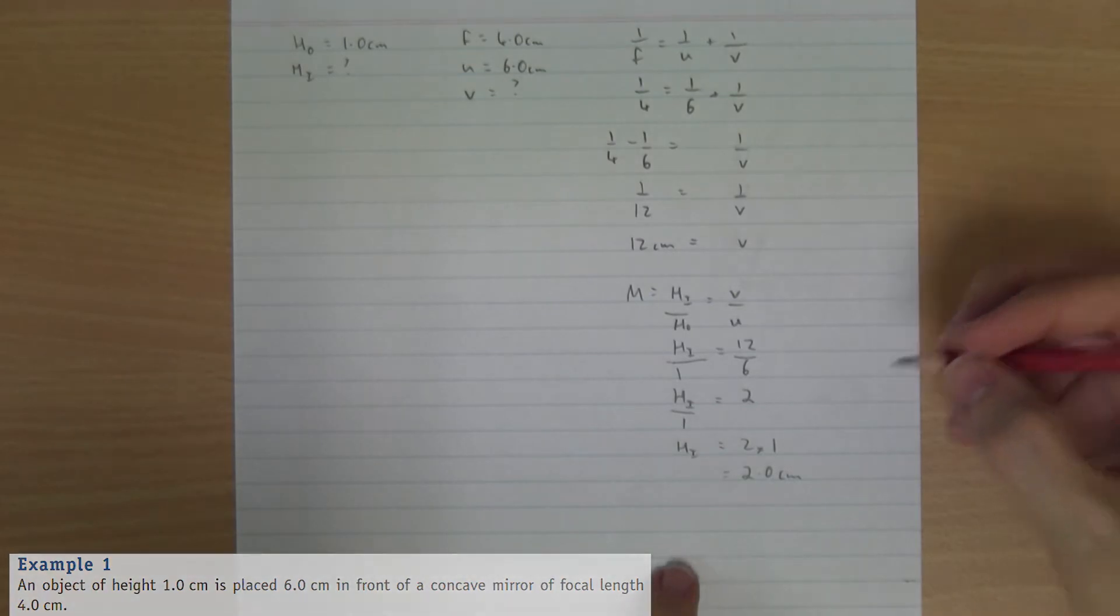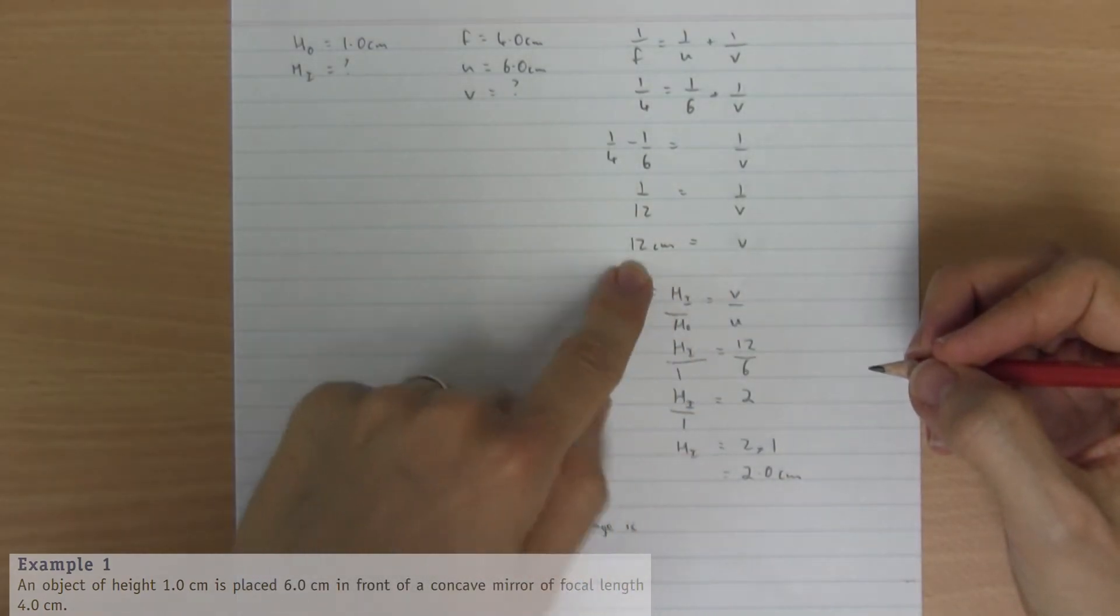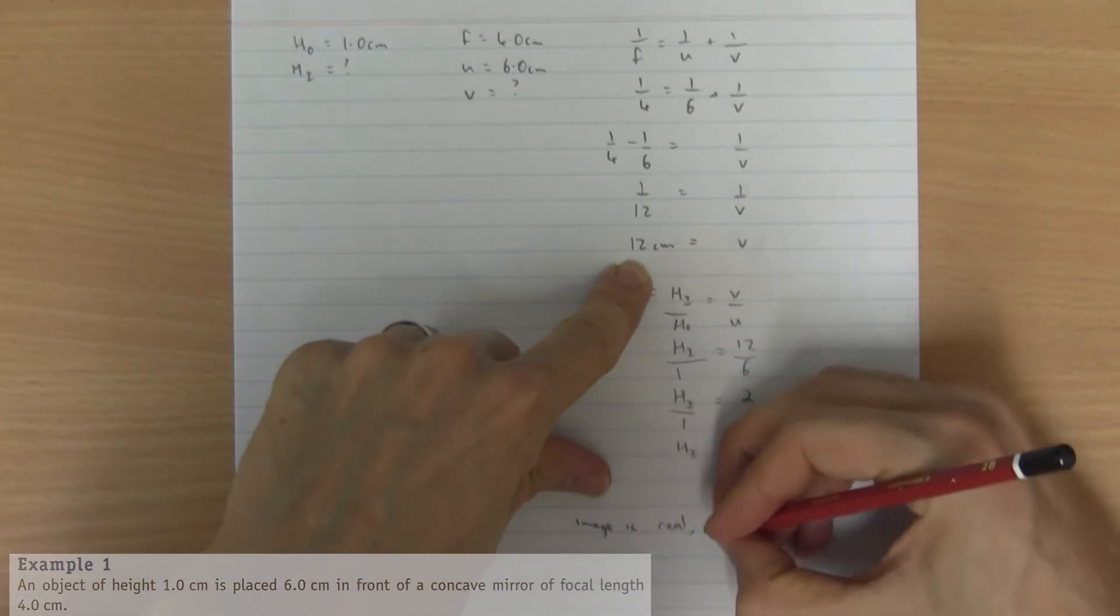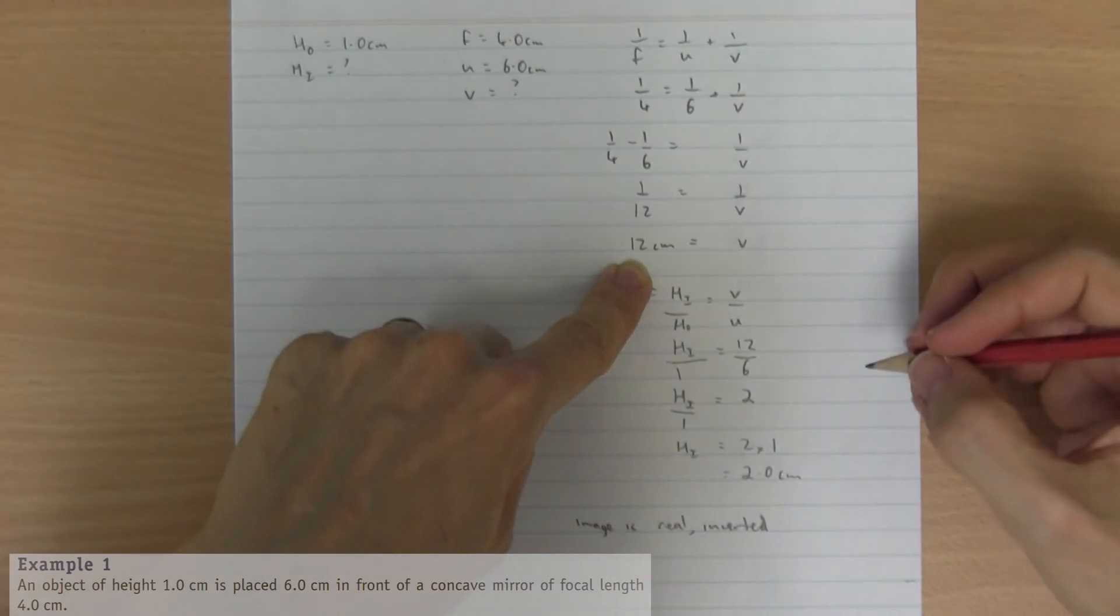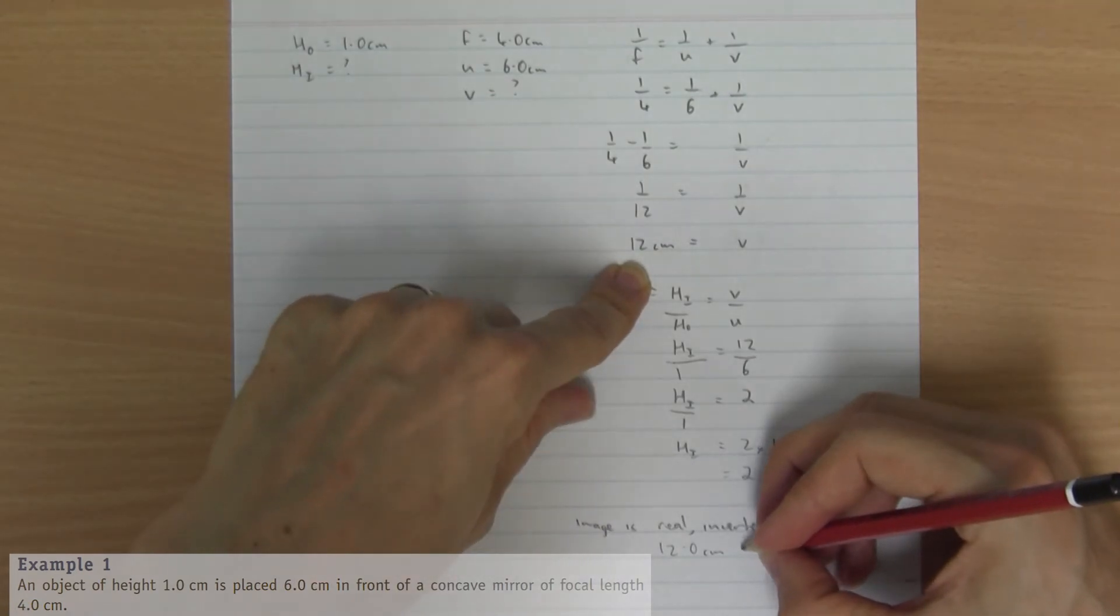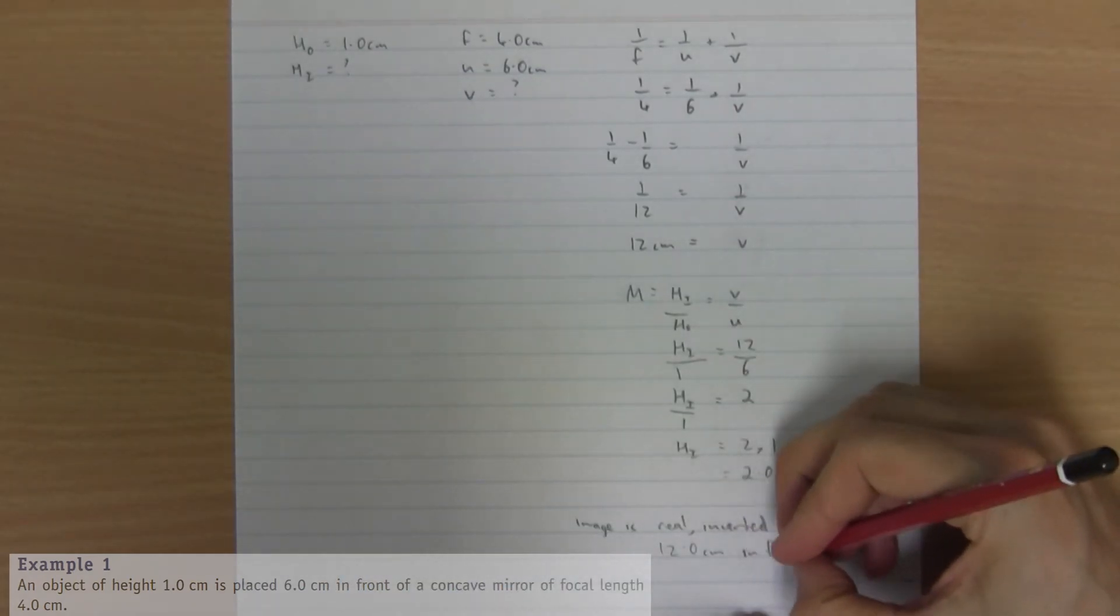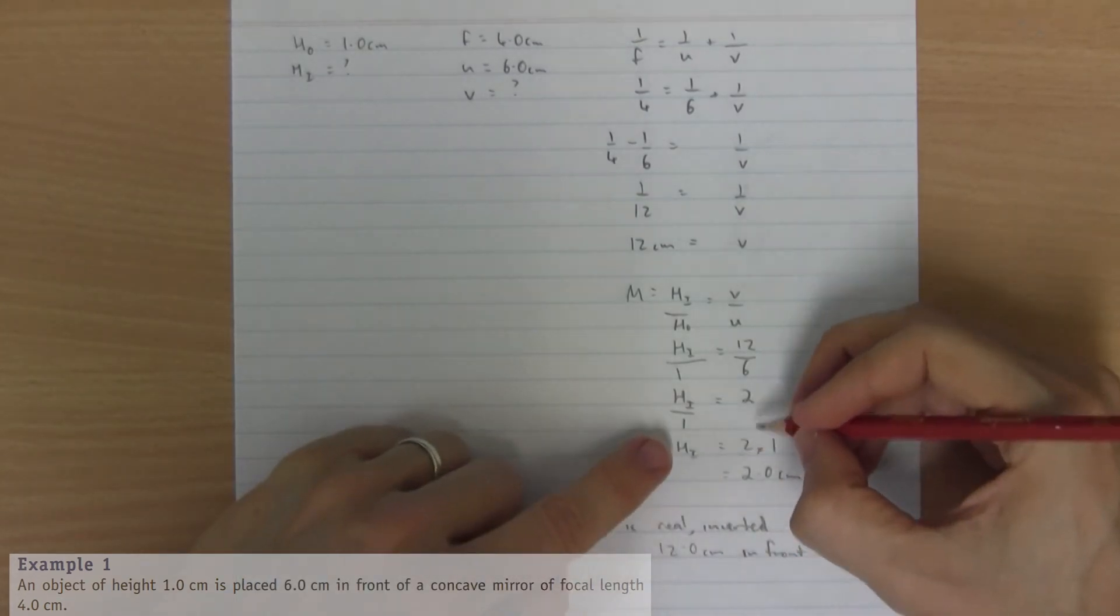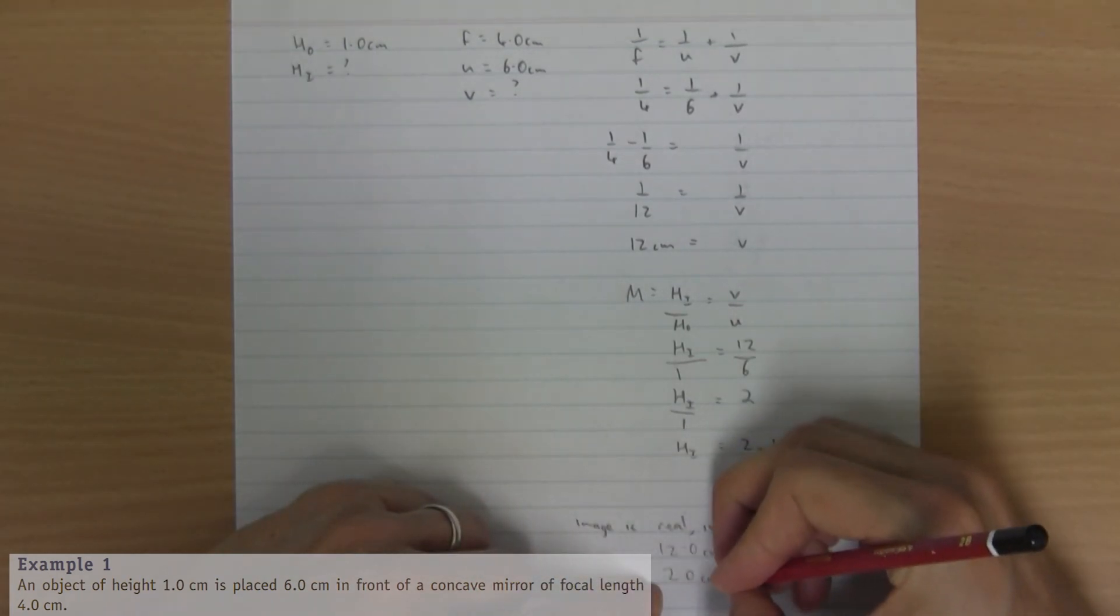Always finish in words. The image is - this distance is positive, so that means it's a real, inverted image. It's twelve centimeters in front of the mirror. And the magnification was two. The height of the image is positive, so it's inverted. We said that already. So it's two centimeters high.